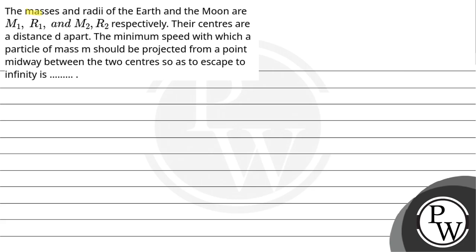Hello, let's read the question. The masses and radii of the Earth and Moon are M1 R1 and M2 R2 respectively.